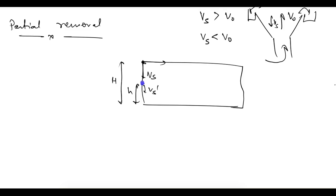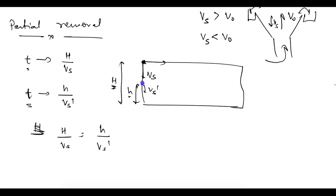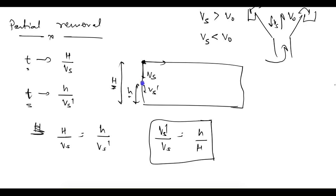In time t, a particle at the top with velocity Vs travels full depth H: t = H/Vs. In the same time t, a particle with velocity Vs' starting at height h travels distance h: t = h/Vs'. Equating both: H/Vs = h/Vs', which gives Vs'/Vs = h/H. This means a particle with smaller settling velocity Vs' will be removed if it starts at a proportionally smaller height h.